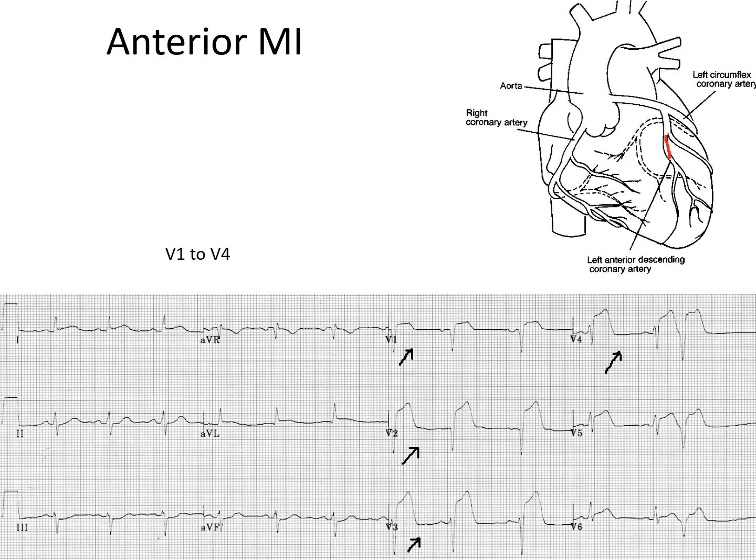Anterior wall myocardial infarction is caused by blockage in the left anterior descending artery. It is characterized by ST segment elevation in anterior leads such as V1 to V4 on ECG.